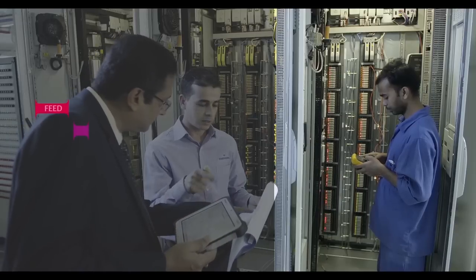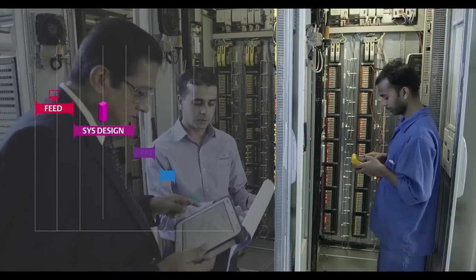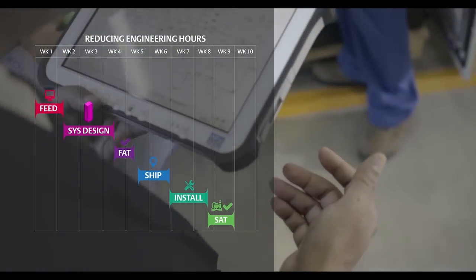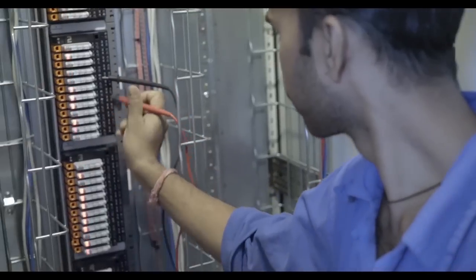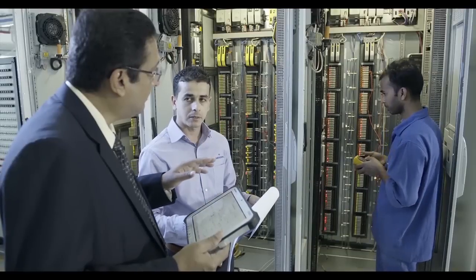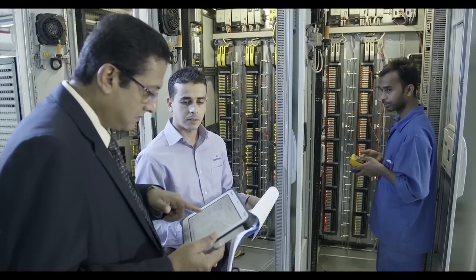Emerson's revolutionary electronic marshalling with CHARMS technology allows IO installation when and where you want it, reducing cost by tens of millions of dollars, eliminating additional spare parts, and enabling smart commissioning, reducing the time and number of people needed in the field.